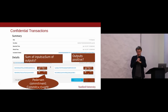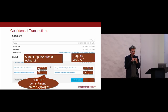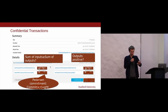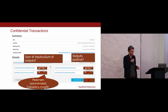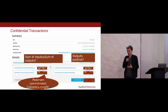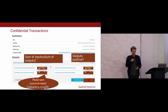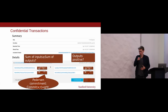A cryptographic commitment is like writing a number on a piece of paper and putting it in a locked box in the middle of the room. You cannot tell what number is written inside. But if I want to open it later, I can only open it to the number I've written — I've committed to that number. There's no way to open the commitment to a different number. We can do this cryptographically using something called a Pedersen commitment.